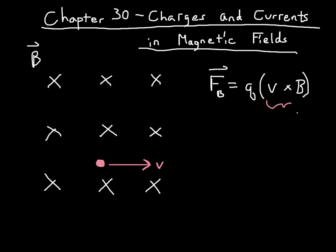This v cross B is a cross product. So it gives us a magnitude and it gives us a direction according to the right-hand rule. We can apply the right-hand rule if we put our fingers in the direction of the velocity and we curl them in the direction of the magnetic field — we find the direction of our force.